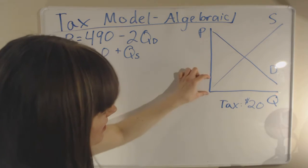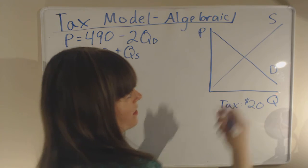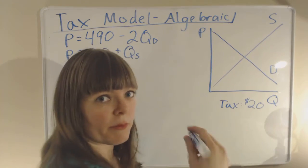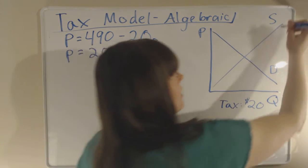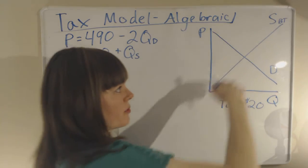So if you imagine the $20 tax is about this much on the axis, we know that the suppliers care about the before-tax supply, so we'll just put a subscript before-tax on the supplier's supply curve.